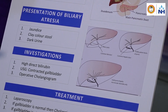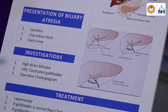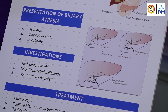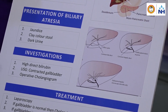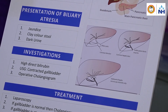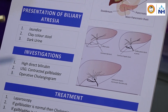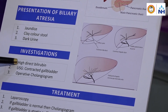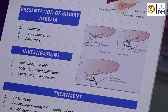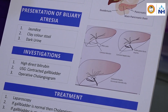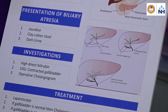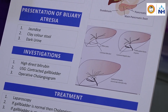Once jaundice persists for more than 10 to 12 days, the treating physician as well as the family should start thinking whether there is a problem and get in touch with the physician. If it is obstructive jaundice, it is confirmed by blood test, which will show a high bilirubin level — specifically high direct bilirubin. One of the commonest causes of elevated direct bilirubin is biliary atresia, though there are many other causes.